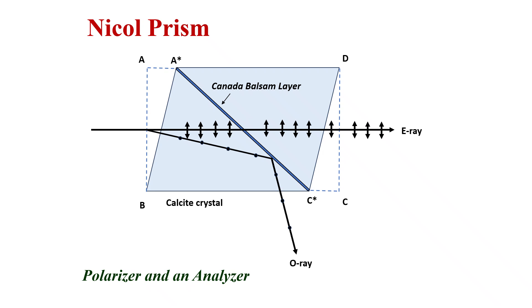To get polarized light, polarizing filters or polarizers are required. One of the polarizers used in polarization study is the Nicol prism. The Nicol prism is made up of a calcite crystal with a specific arrangement, and importantly, it can be used to convert unpolarized light into polarized light. To do this, the Nicol prism uses the phenomenon of double refraction.